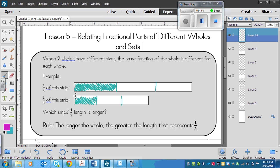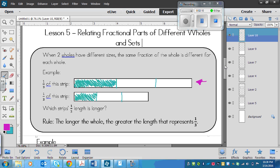Which strip's one-third length is longer? Well, of course it's this one, right? But that's basically a pictorial idea of what we'll be doing, and we'll also be doing some of these strips. So here's our first rule: the longer the whole, the greater the length that represents any fraction. In this fraction would be one-third. So, so long as the two fractions are the same, then just the longer the length, then that's the one that will be greater. It's a pretty easy rule to remember.